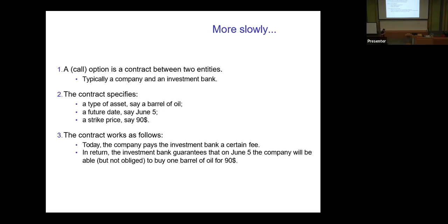Let's say the asset is a barrel of oil. Then you need to set some future date — let's say June the 5th, three months from now. And then you have a certain strike price — just some fixed strike you decide today, let's say $90. This is how the contract works: today, the company pays a certain amount of money to the bank, which is the price of the option. In return, the bank guarantees that on June the 5th, I will be able — but not obliged — to buy one barrel of oil for $90.